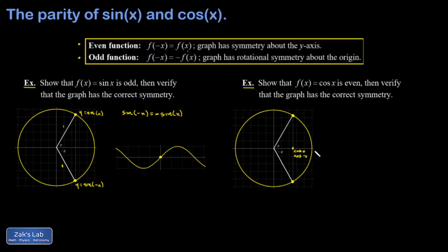So cos(x) and cos(-x) are yielding precisely the same x-coordinate. So I can write down cos(-x) = cos(x). And we've shown that the cosine function is even.